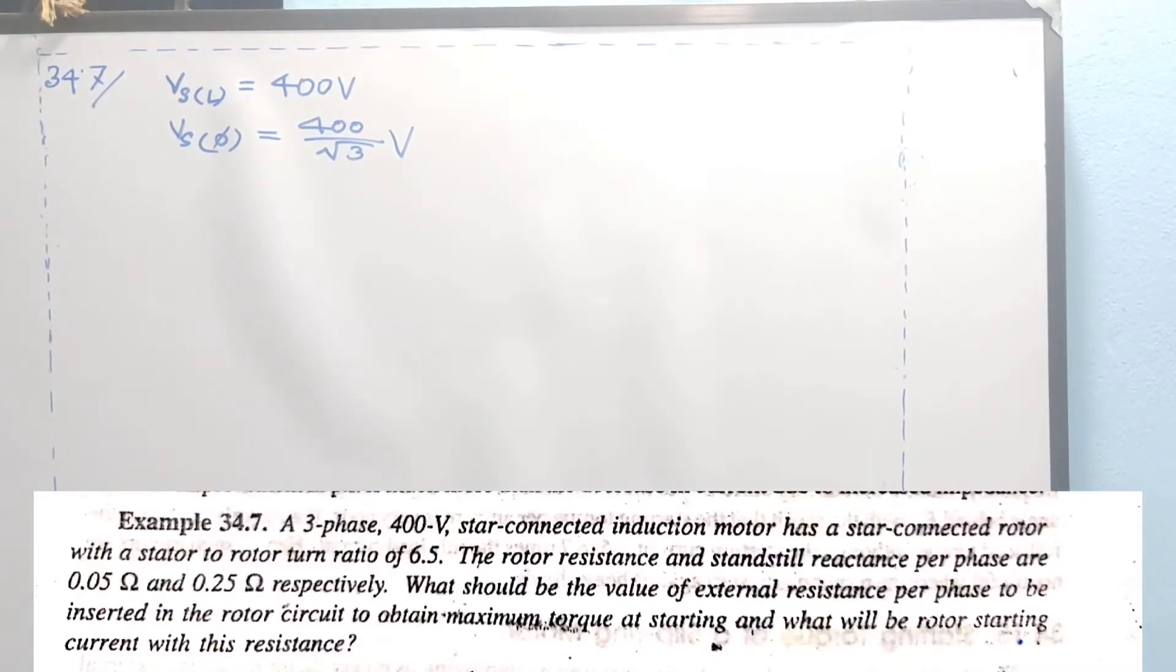We have to find the rotor voltage. We need to use this transformation ratio, which is like a transformer primary secondary side. The transformation ratio gives us the rotor voltage value.